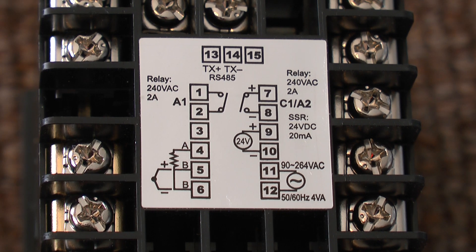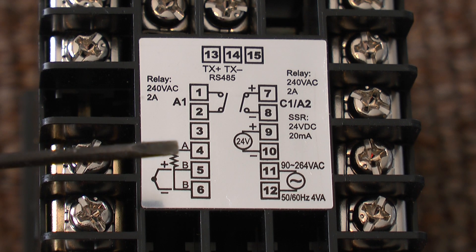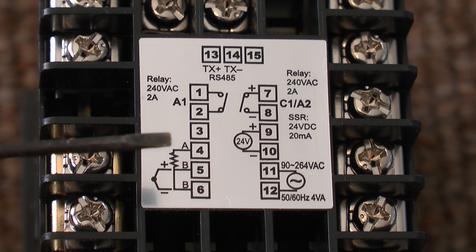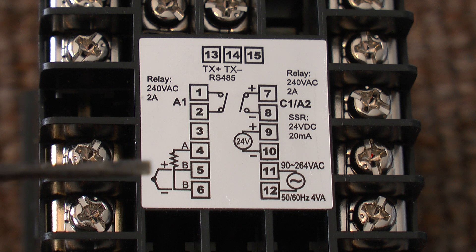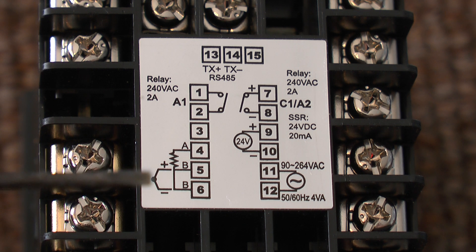If you are using a PT100, it will normally have three wires. One of them will go on terminal 4 and the other two, normally of the same color, will go on terminals 5 and 6.